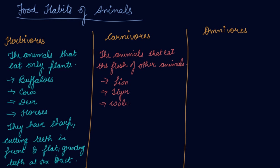Wolves, dogs, snakes, and eagles that eat insects and fish are all carnivores. All these animals need the flesh of other animals, so they are known as carnivores.